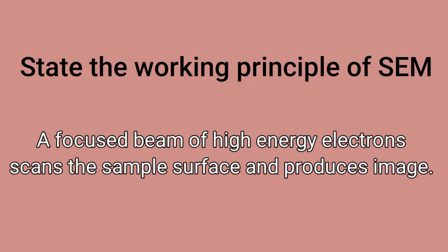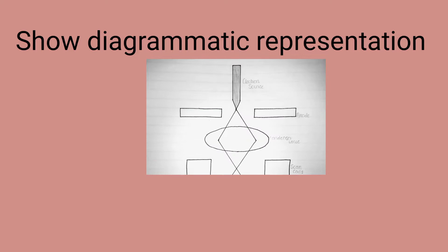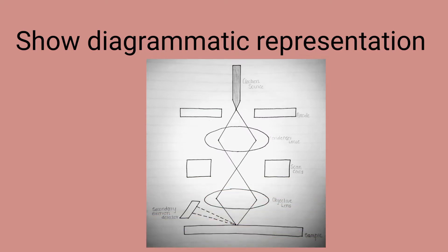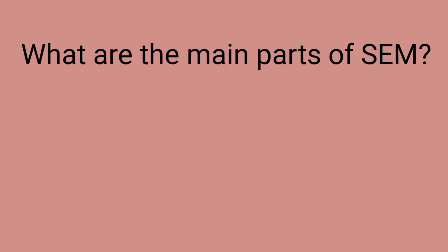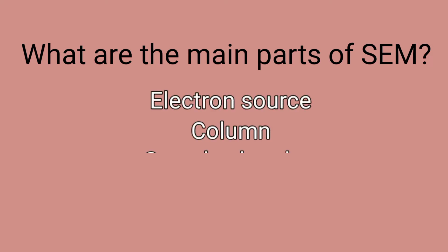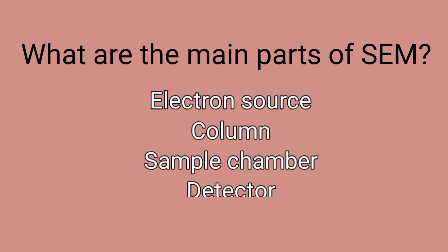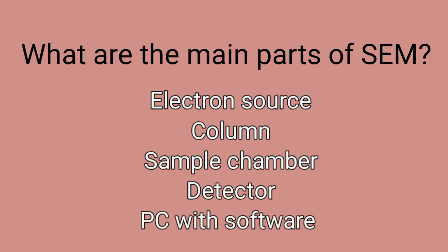Show the diagrammatic representation of SEM. This is how scanning electron microscopy is represented. The main parts of SEM include the electron source, the column down which the electrons travel — comprising lenses and coils — the sample chamber, the detectors, and a computer with loaded software.